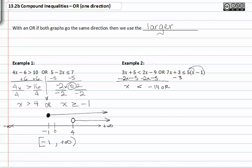distributing first, we get 7x + 3 ≤ 5x - 5. Now subtract three from both sides, subtract 5x from both sides to get 2x ≤ -8. Divide by two: x ≤ -4.